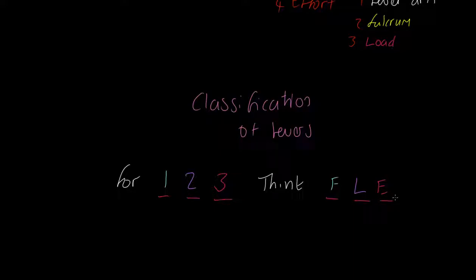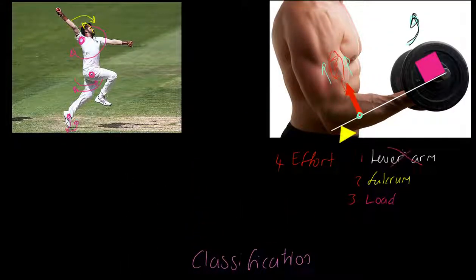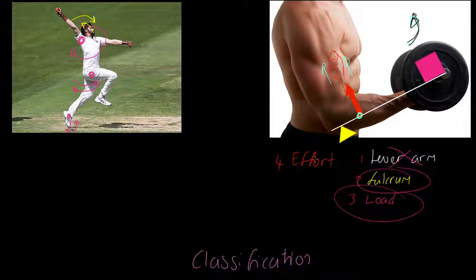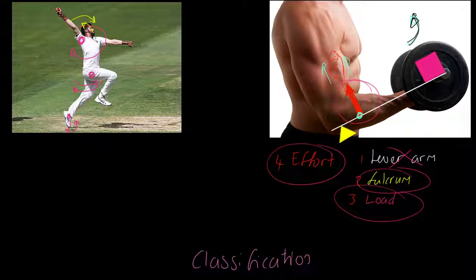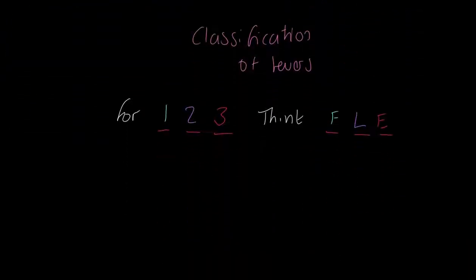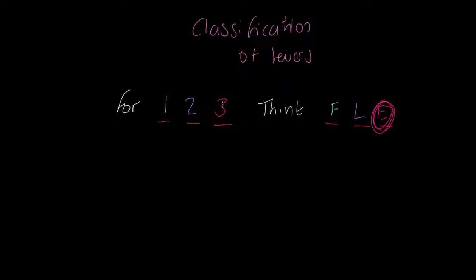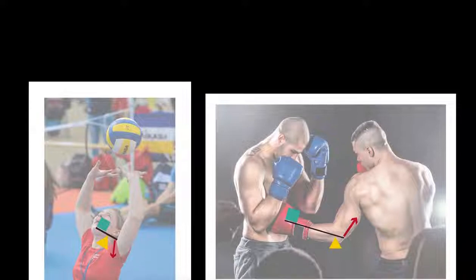For one, think F. For two, think L. For three, think E. What am I talking about here? Well, we can tell which lever is which by which component is in the middle. By definition, of course, the lever arm can't be in the middle. It's the solid bar, everything's attached to it. So we're asking, is the fulcrum in the middle? Is the load in the middle? Or is the effort in the middle? So I'd like you to look at our bicep curl. The effort is between the other two. This must be a third class lever.